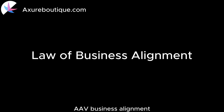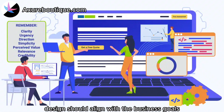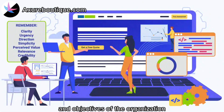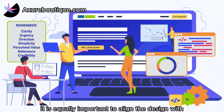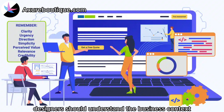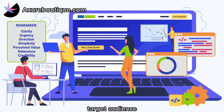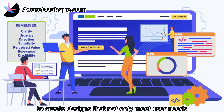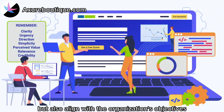Law of Business Alignment: design should align with the business goals and objectives of the organization. While user-centered design is crucial, it is equally important to align the design with the business goals and objectives. Designers should understand the business context, target audience, and desired outcomes to create designs that not only meet user needs but also align with the organization's objectives.